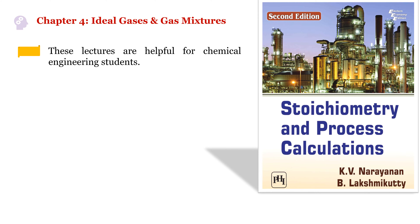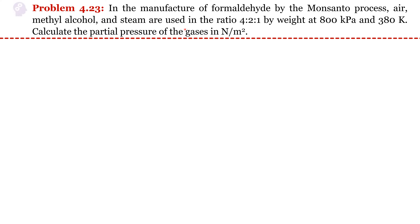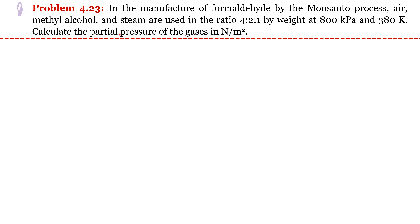Problem 4.23: In the manufacture of formaldehyde by the Monsanto process, air, methyl alcohol, and steam are used in the ratio 4:2:1 by weight, at 800 kPa and 380 K. We need to estimate the partial pressure of the individual gases. For finding the partial pressure, we can use Dalton's law.